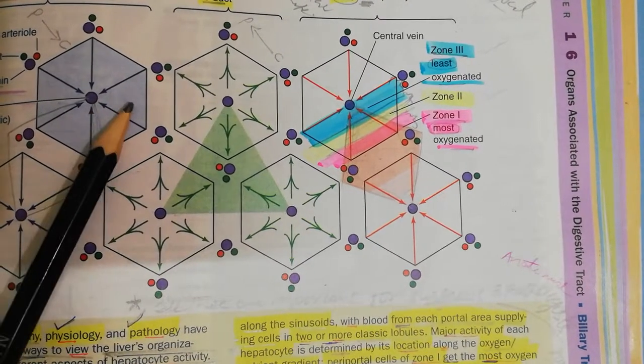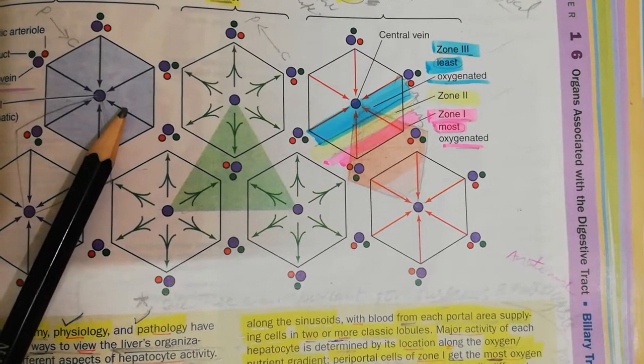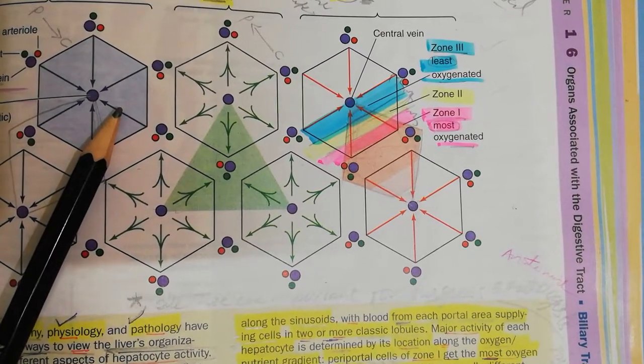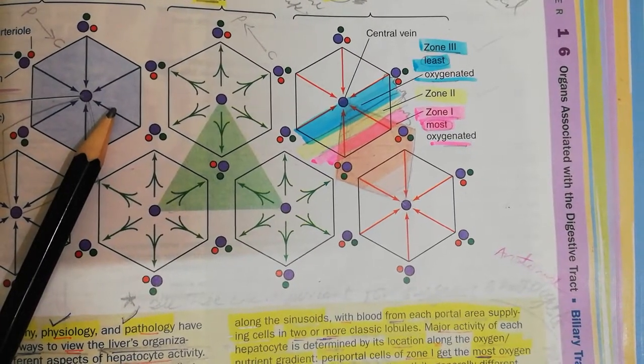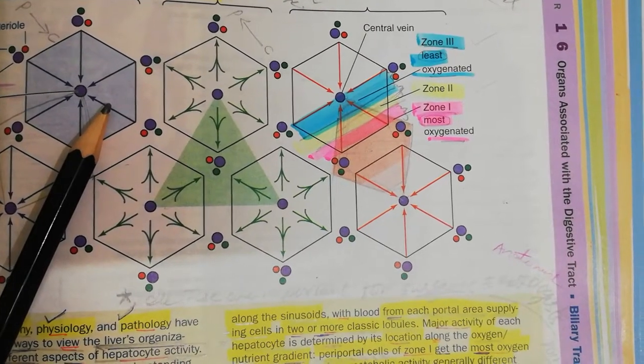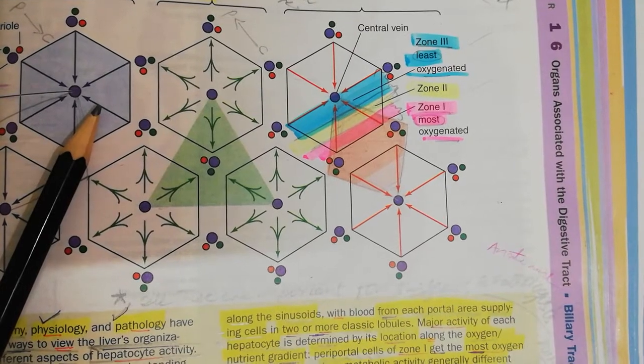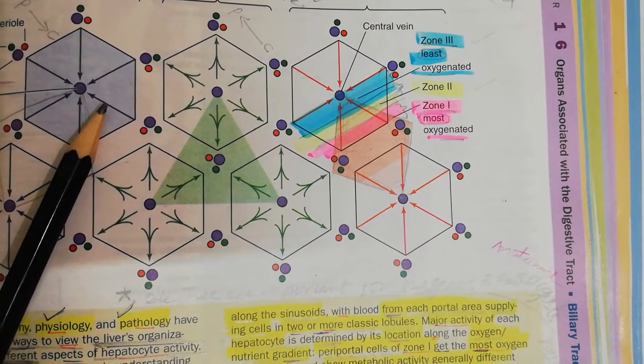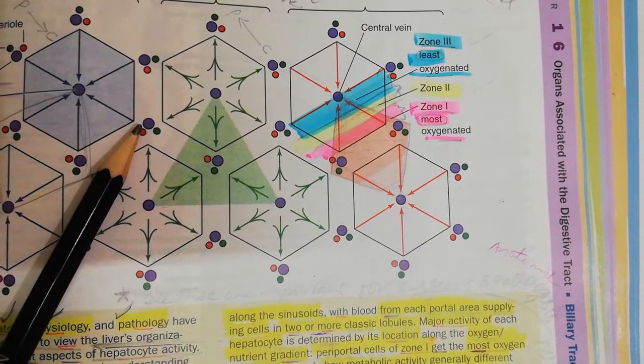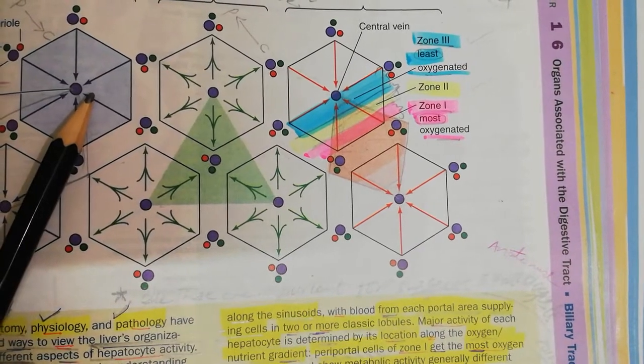Number one, this hexagonal look which is the classical hepatic lobule. This deals with the endocrine function. When we study the endocrine function, we consider the classical hepatic lobule because blood flows from the periphery towards the center.